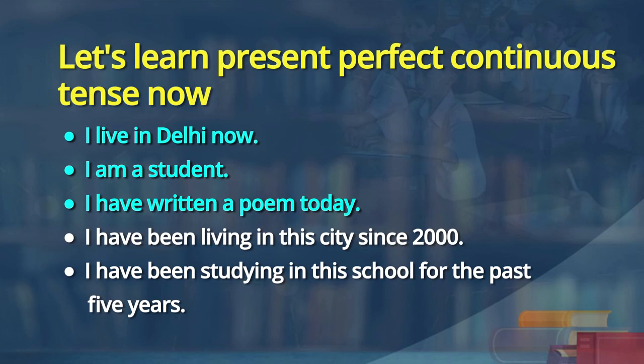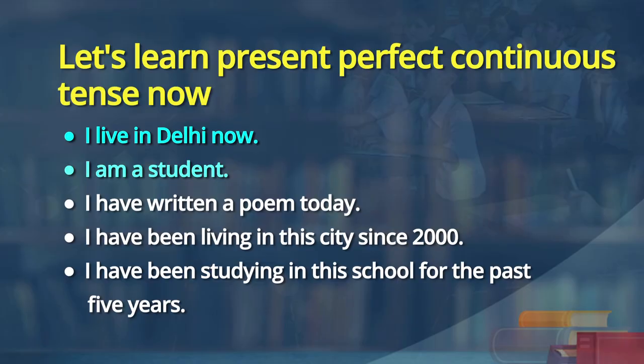Look at the first three sentences, learners. I live in Delhi now — that means I am living in Delhi right now, sometime, so simple present. I am a student — you are describing, simple present. I have written a poem today — when did you write? Today, just now, and its effect is still there. That is present perfect.